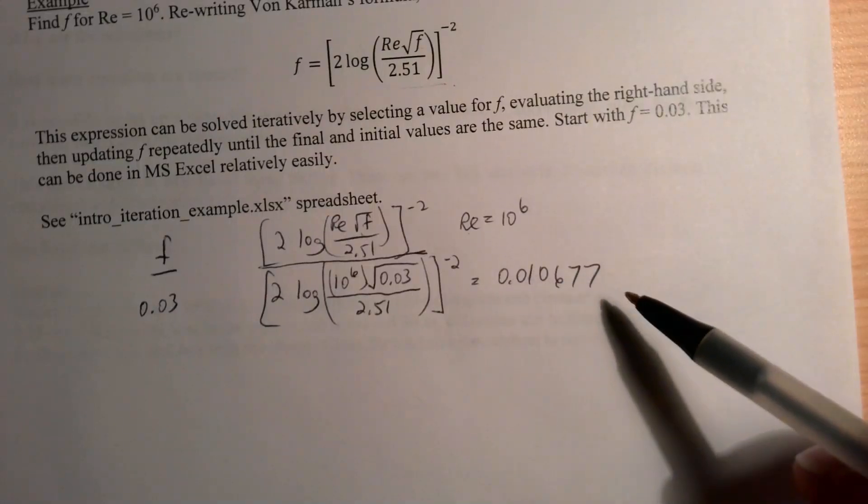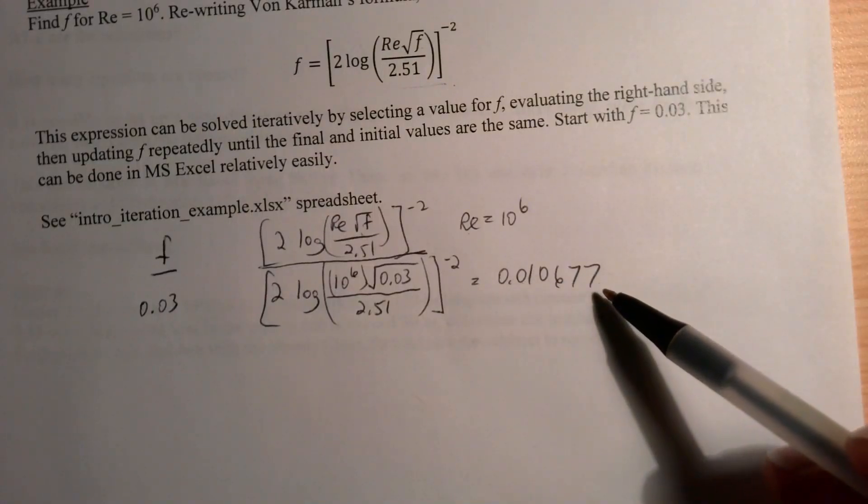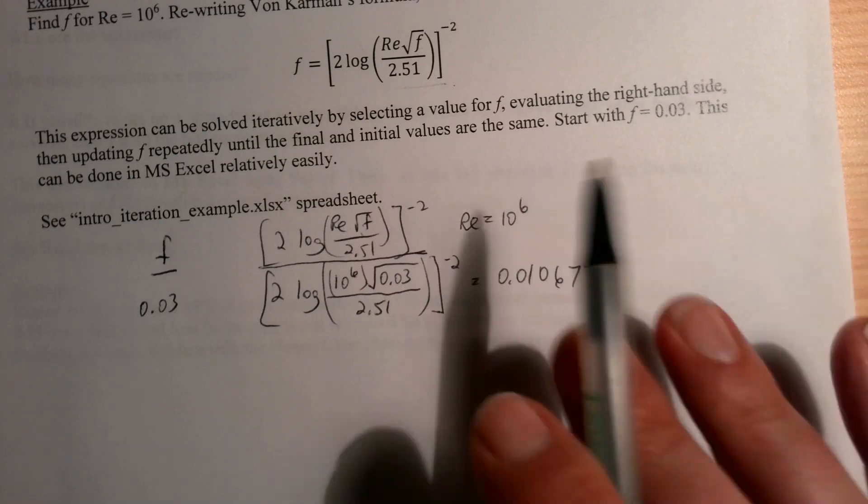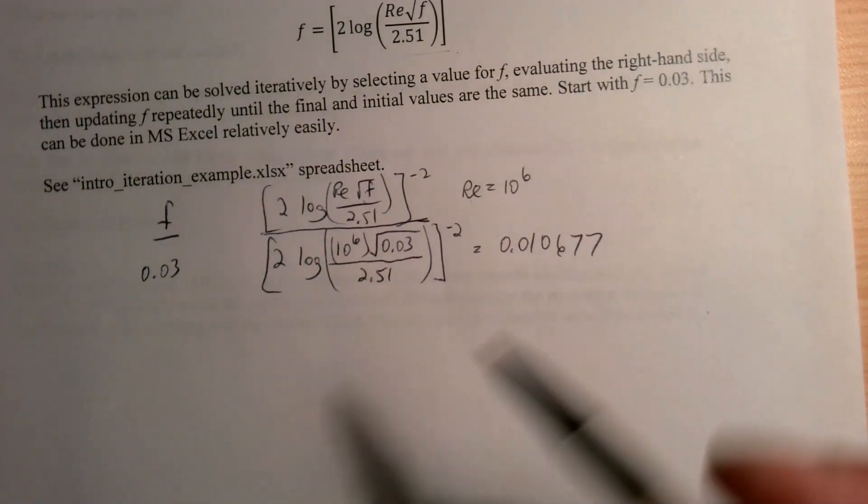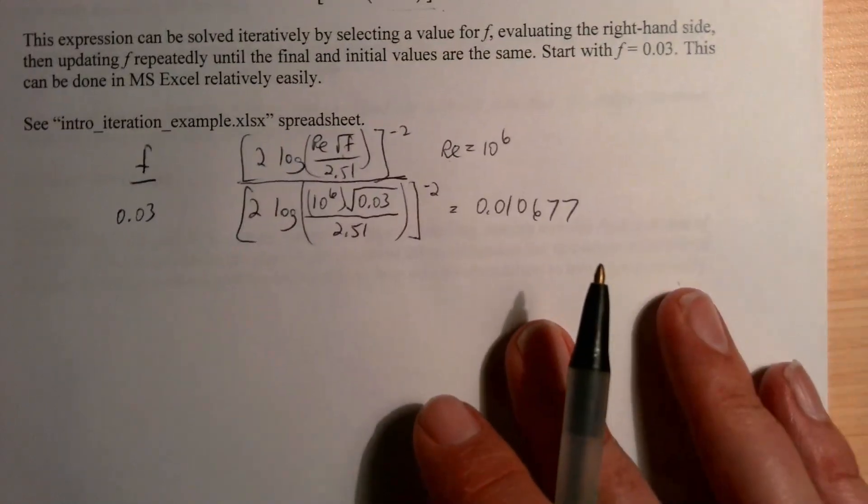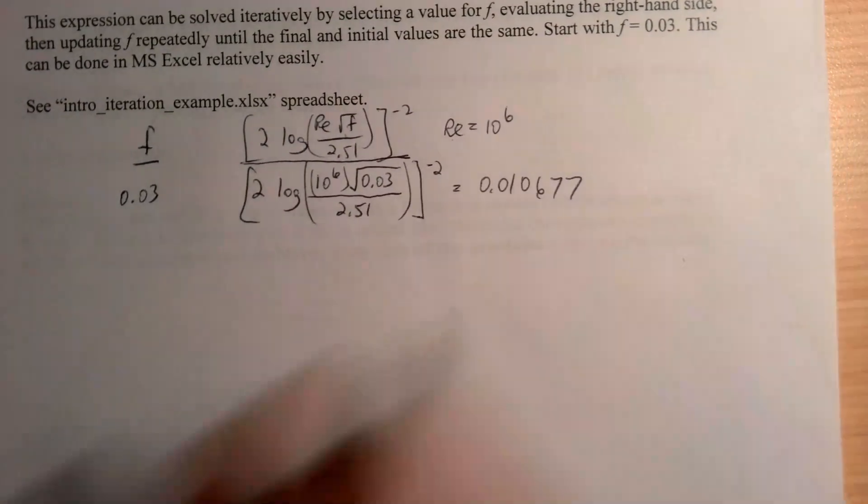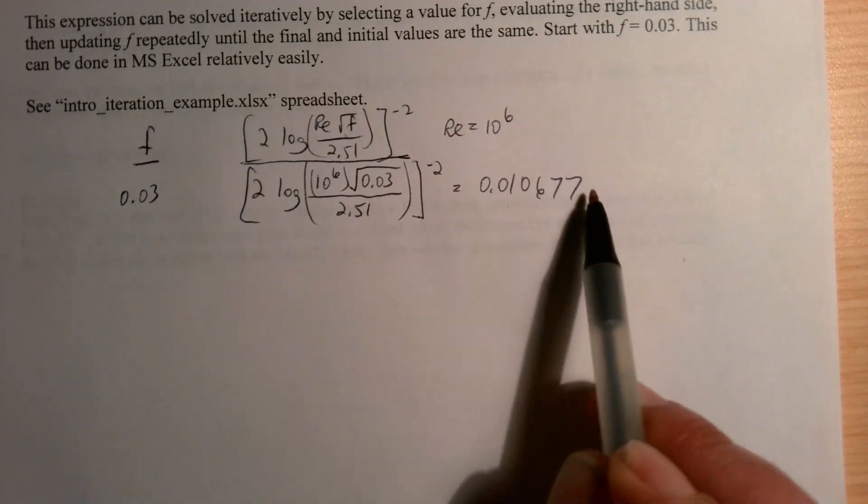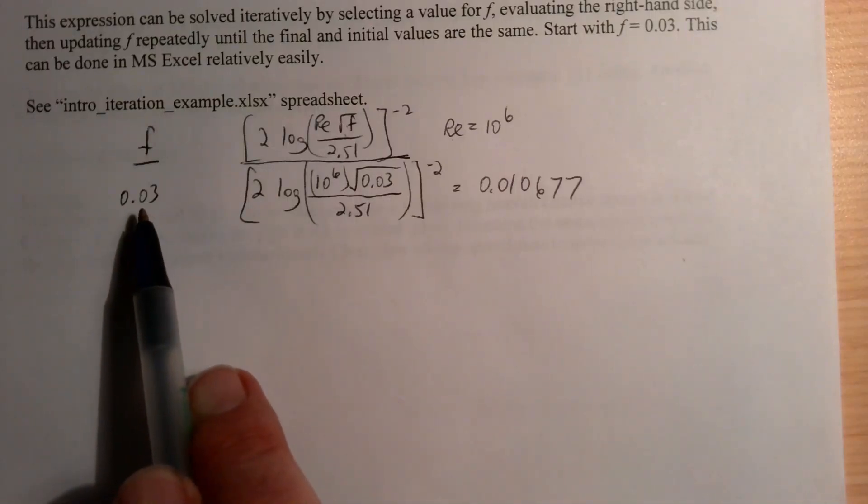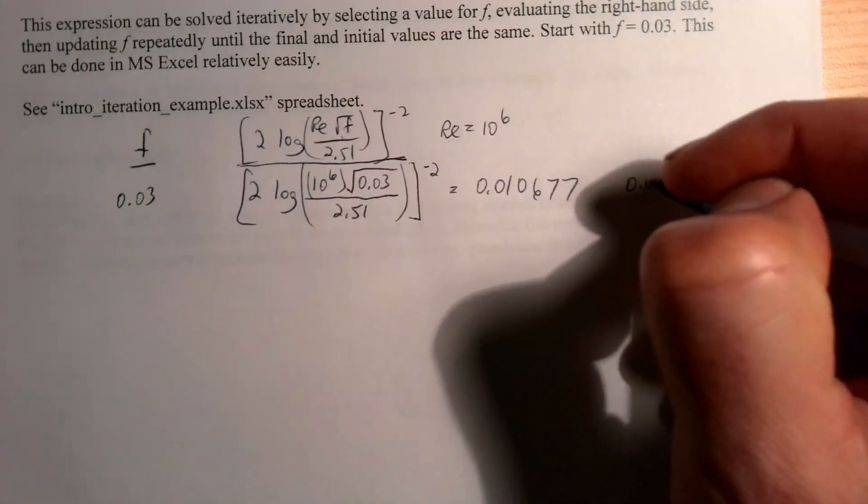And that gives us a value of 0.010677. Of course, I've written out a kind of ridiculous number of significant figures here—five significant figures. In reality, we'd be happy to get two significant figures, but just for the point of illustrating how this method can be used to get to an answer that is as precise as we would like it to be, I will show you the value.